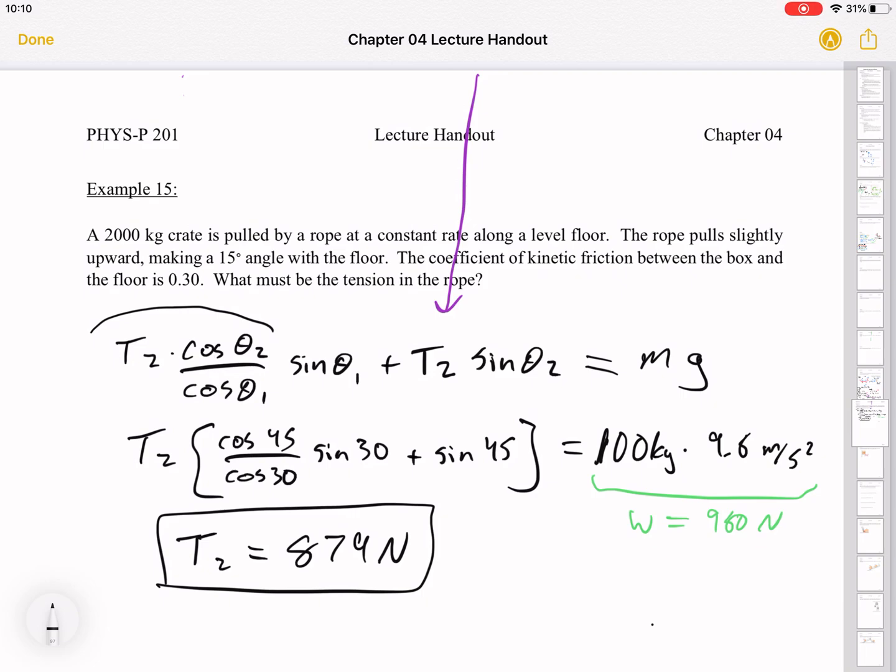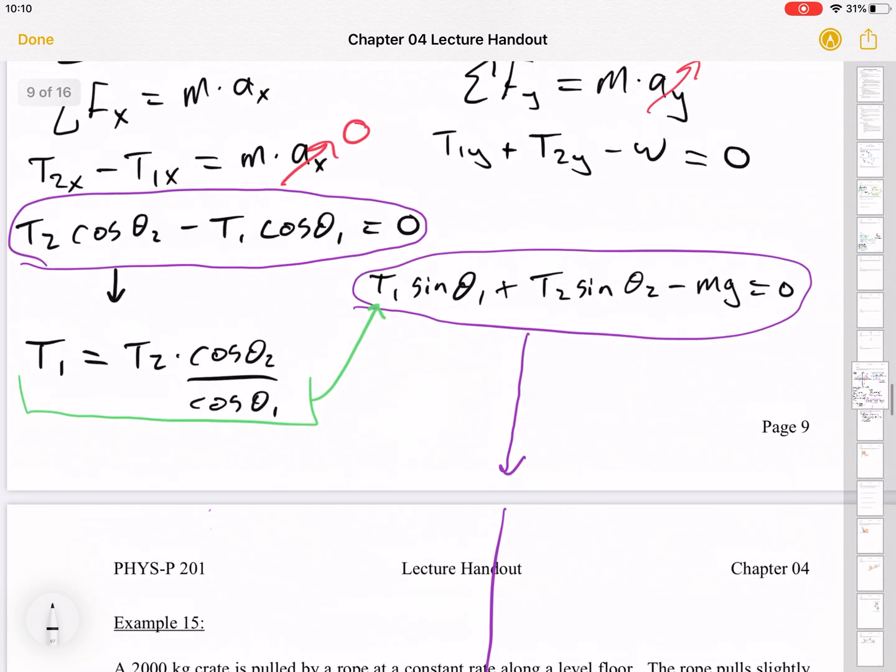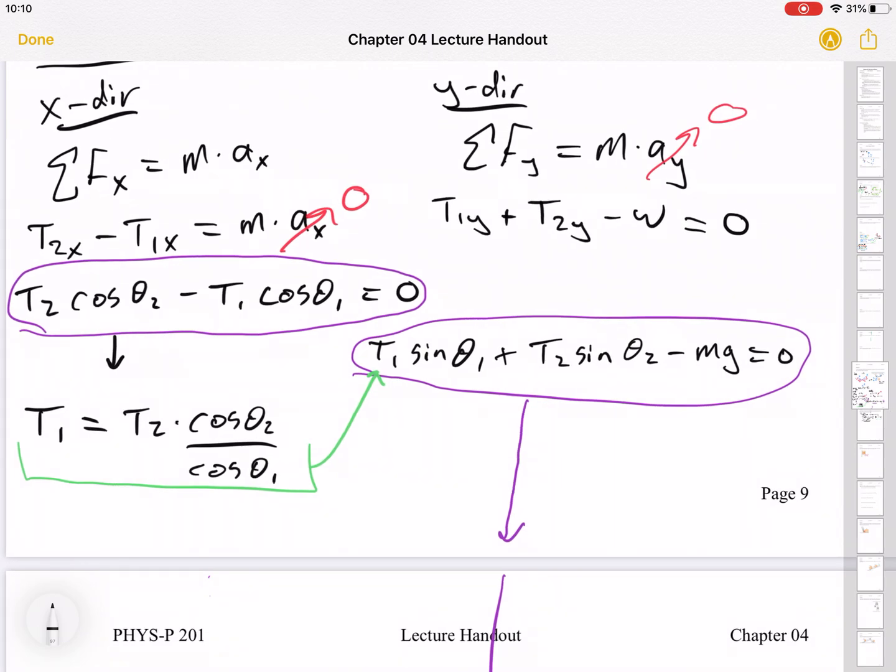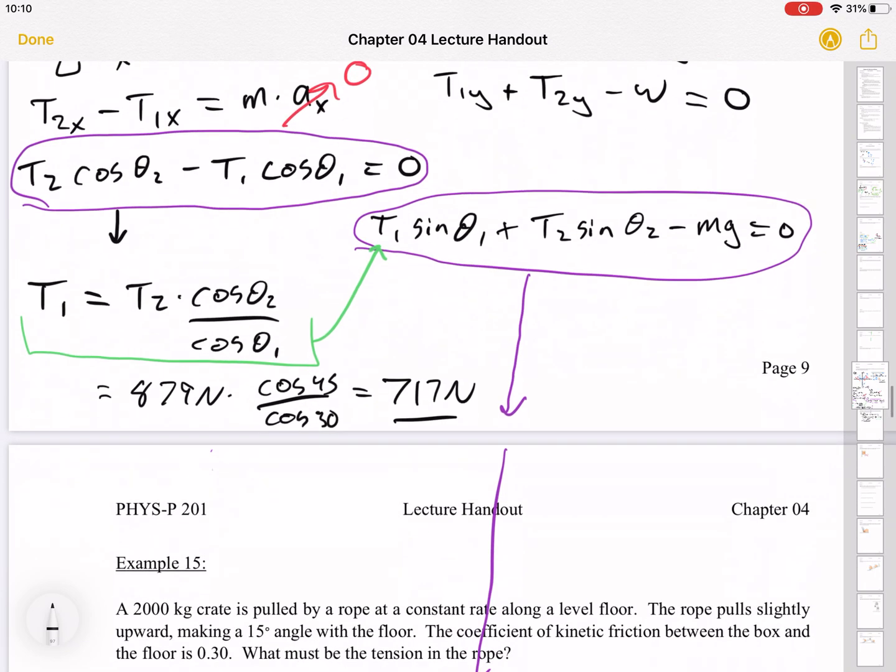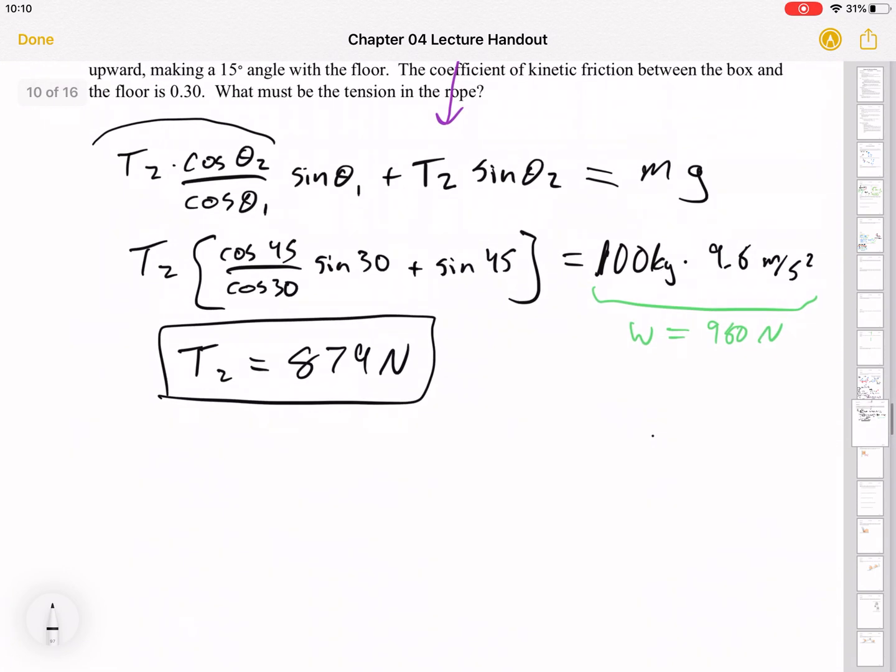And then we can take that T2 and plug it into either of these equations to get T1. I could say 879 newtons times cosine 45 divided by cosine 30. I think what you get when you do that is 717. So T1 is 717.